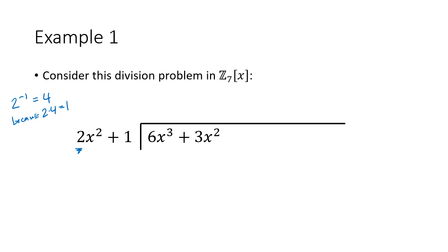When we divide 6x cubed by 2x squared, we take the leading term of the dividend and divide it by the leading term of the divisor. That's 6 times 2 inverse times x to the first — subtracting exponents gives 3 minus 2 equals 1. Then 6 times 2 inverse is 6 times 4, which is 24, and 24 mod 7 equals 3. So the first term of the quotient is 3x. We could also have noted that 6 divided by 2 in regular arithmetic is just 3.